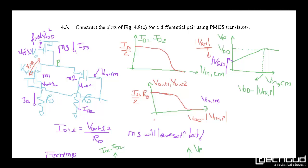If Vincommon mode is 0, it does not mean PMOS M1 will be switched off, because it depends on Vsg, which depends on Vp. If Vp is at some potential, this transistor will be on. For M3, it depends on how Vp is biased — if biased such that Vp puts M3 into saturation mode, then M3 will be in saturation, giving ISS current.